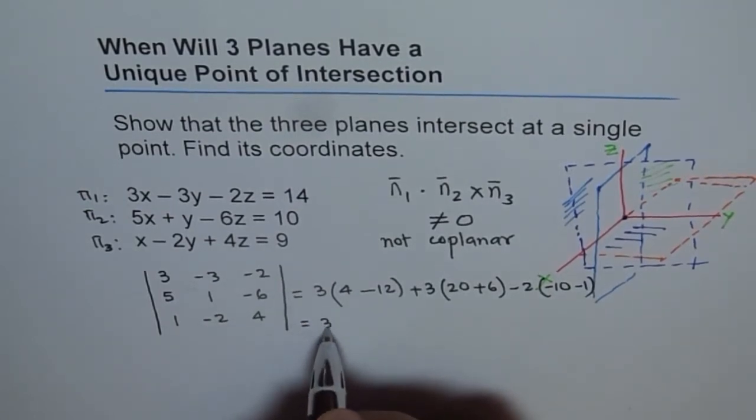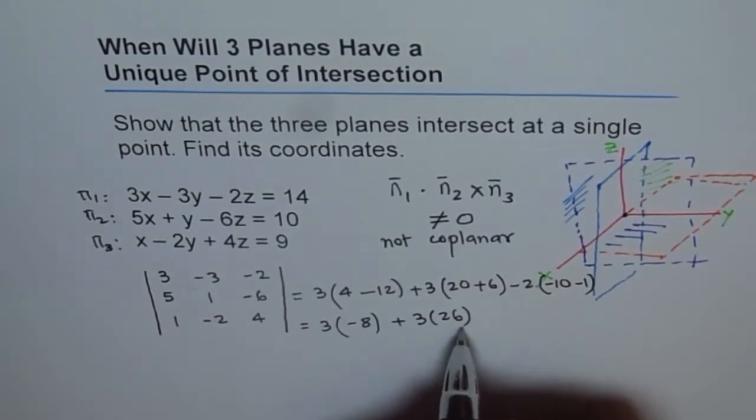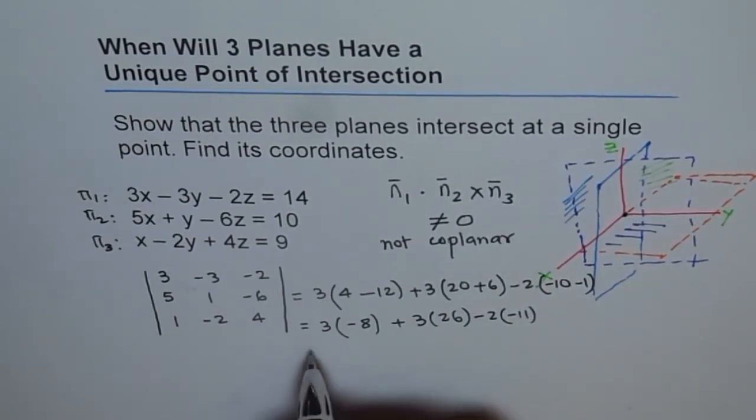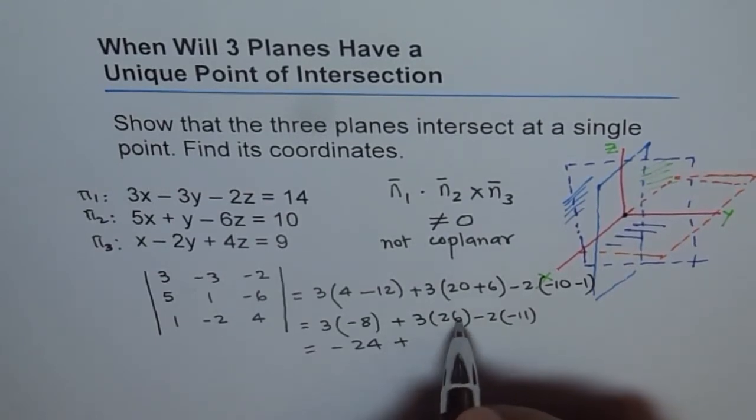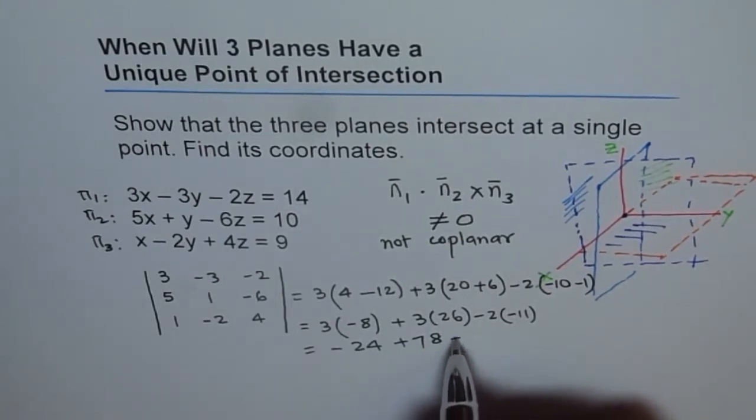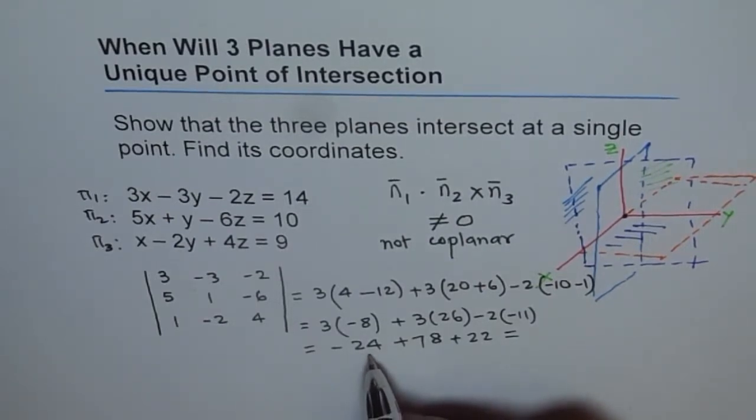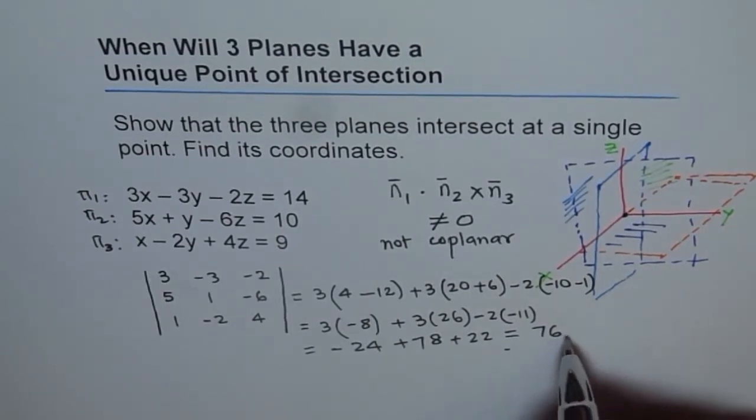So this is equals to 3 times minus 8, plus 3 times 26, minus 2 times, this is minus 11. Which could be written as minus 24, plus 6 times 3 is 18, and 78, and minus and minus becomes plus 22. So this becomes, so plus 22 will give us this as minus 2, and so we get plus 76, which is definitely not equal to 0.